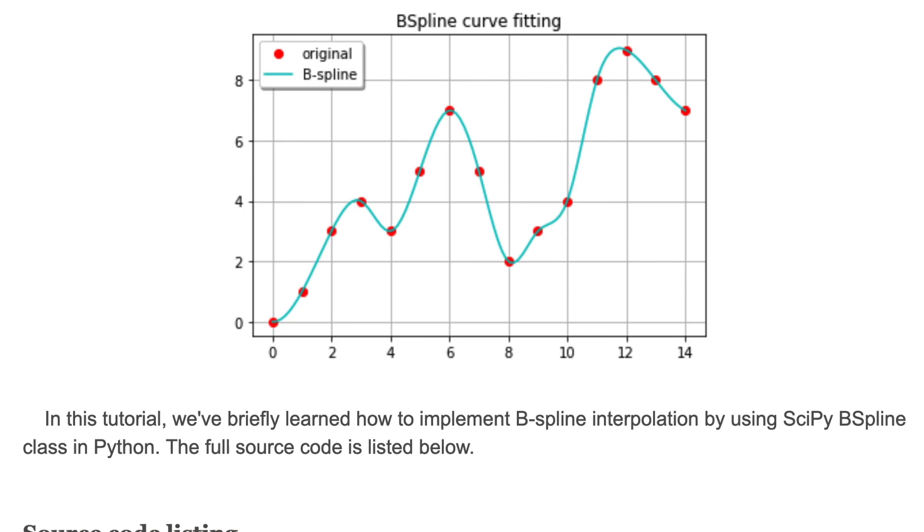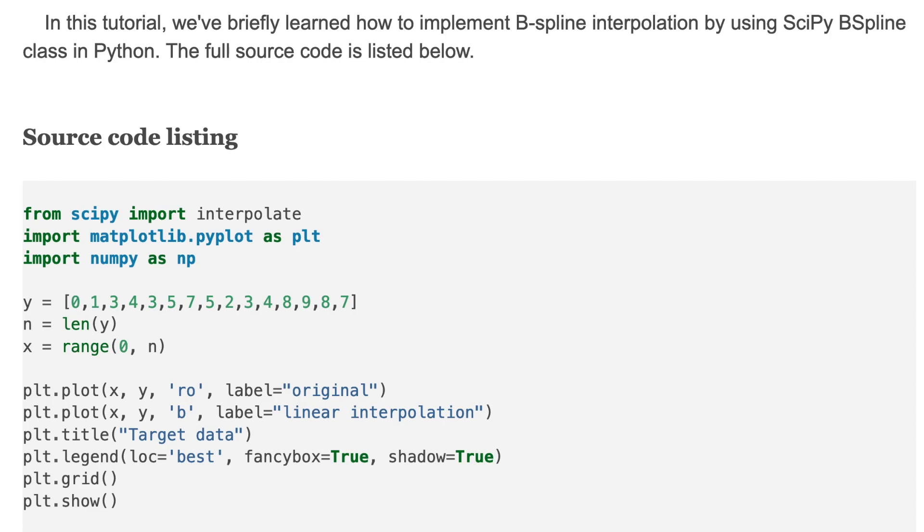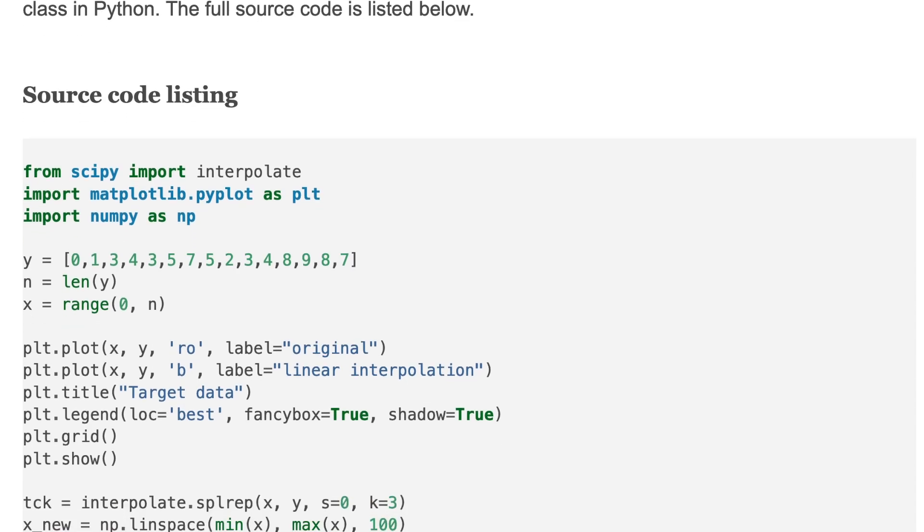That's it for this tutorial. In this tutorial, we briefly learned how to implement B-spline interpolation by using SciPy B-spline class in Python. Here is the source code. I'll put the link in description.